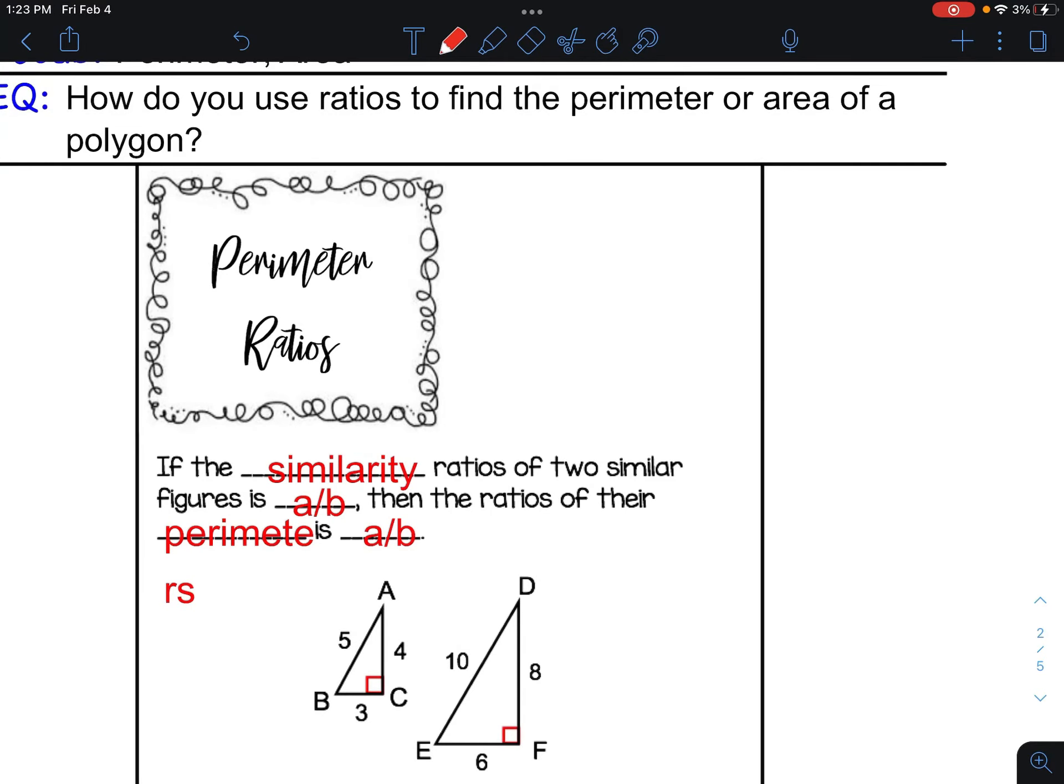I'm going to talk here about using the scale factor similarity ratio of two similar figures and compare it to what the perimeter of the smaller shape is to the bigger shape and also with the areas.